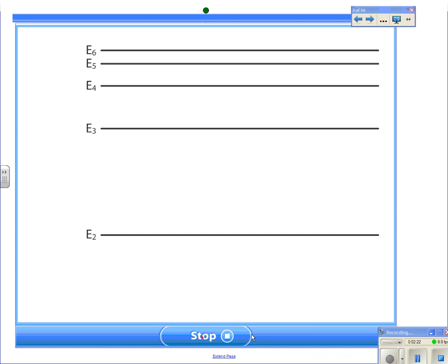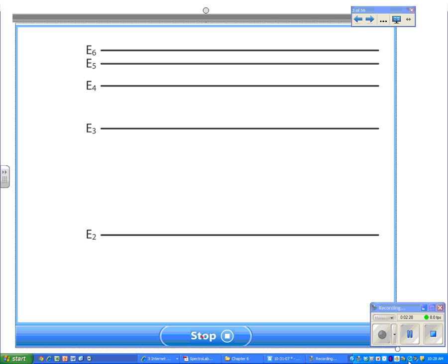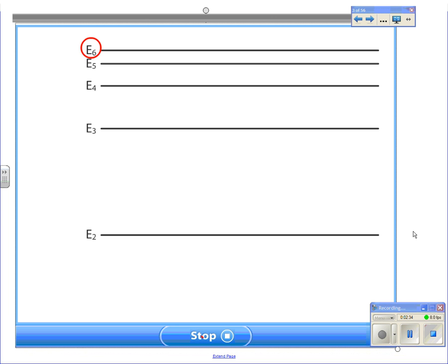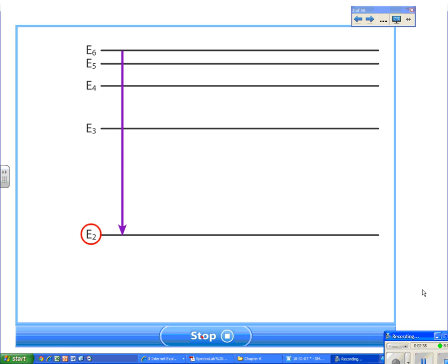Electrons in atoms can only have certain amounts of energy. Here we see several of the possible energy levels of a hydrogen atom. Suppose an excited atom of hydrogen has an electron at energy level 6. There is a probability that the electron will emit energy and jump back to a lower energy level. It could do so only by giving off energy equal to the energy difference between the two levels.